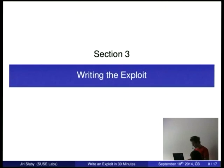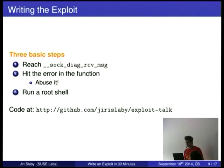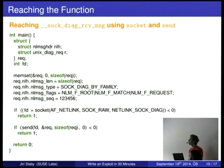Now how to exploit the bug. The exploit I will be talking about is available at my repository at GitHub as exploit-talk. There are three basic steps. First, we want to reach the function where the bug is. Second, we want to hit the actual error in the function and abuse it. And finally when we do it we just run a shell which should be already a root shell.